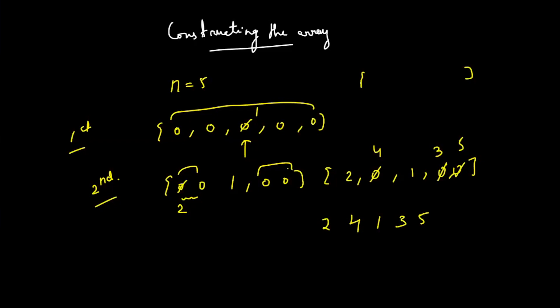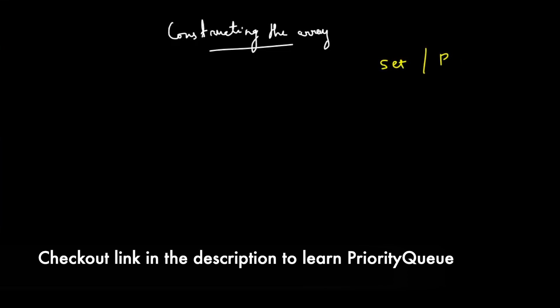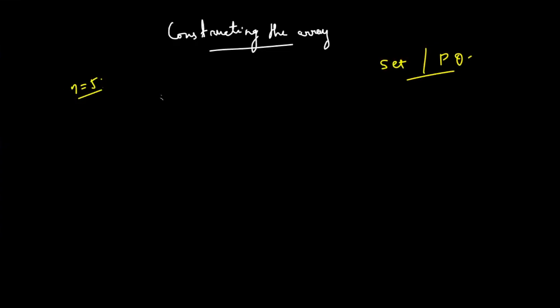Once you've performed all these steps, you print the array and you're done. It's a simple problem where you use brute force. You can either use a set or a priority queue — both will work. Let's take the example n=5 and try to solve it. You know a priority queue stores the maximum element.